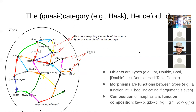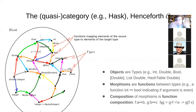So, in Hask, objects are types, morphisms are functions between types, and composition of morphisms is just function composition. Identity morphisms are identity functions. Function composition is, thank goodness, associative — so if you compose F with G composed with H, it's the same as F composed with G and then H. It has this nice associative property.